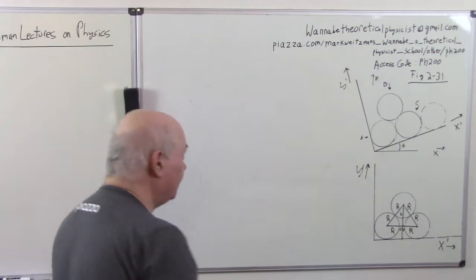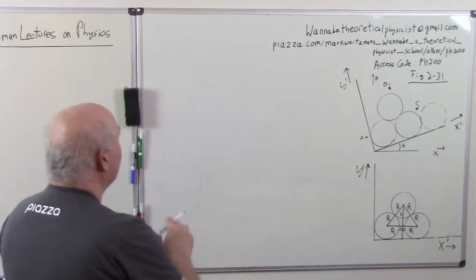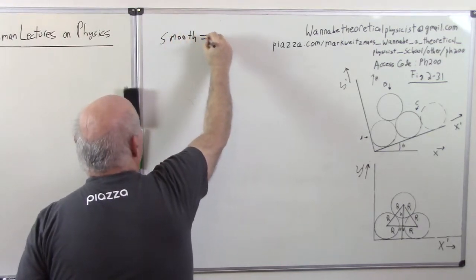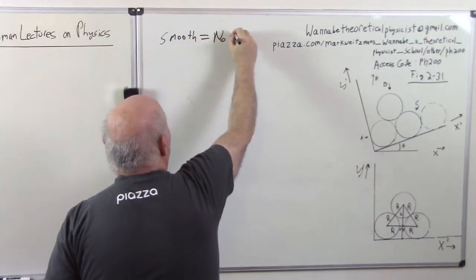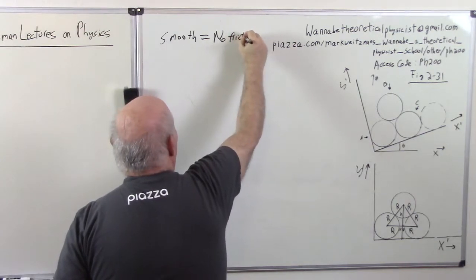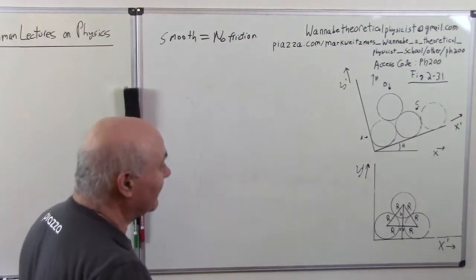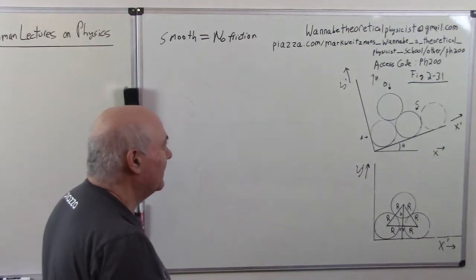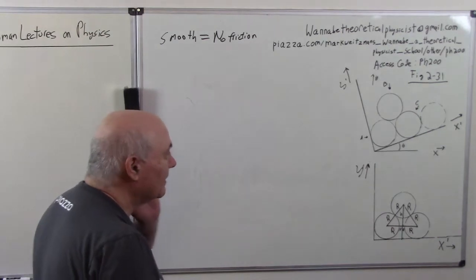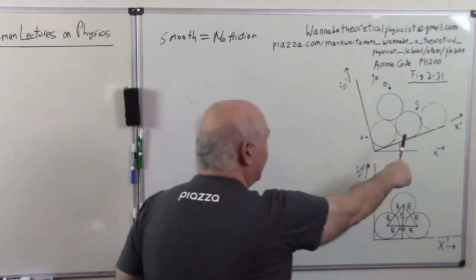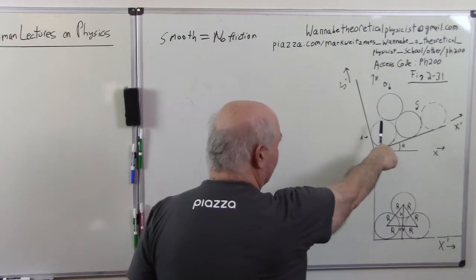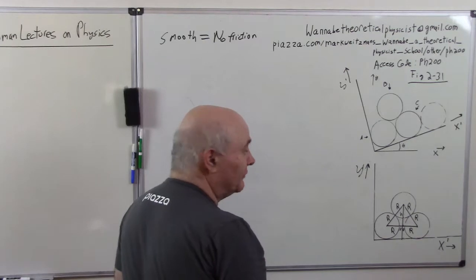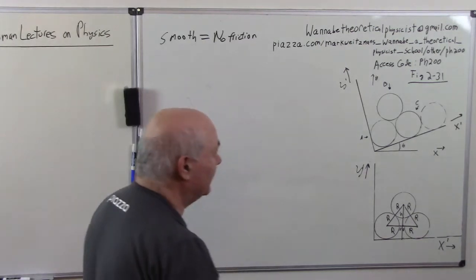In doing this problem the first key word was 'smooth' — no friction. When I first read this problem I didn't believe it because it said logs, and I said how can logs be smooth and have no friction, but that's what it says. Now if you take away this log, it's not obvious when this thing is going to begin sliding or tumbling or anything. And if you try to do these by forces, which you can, you get into some hairy trigonometry.